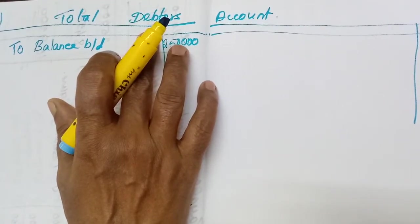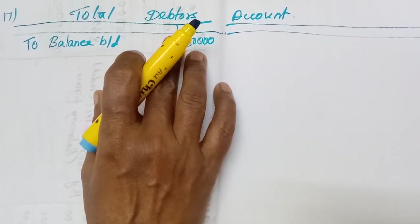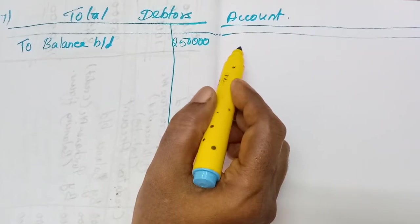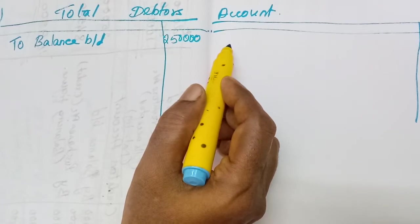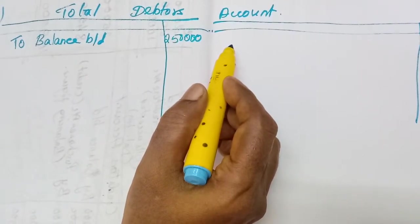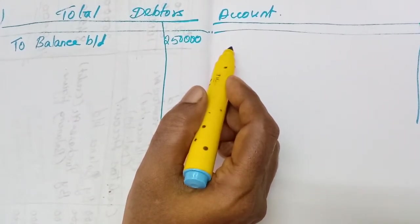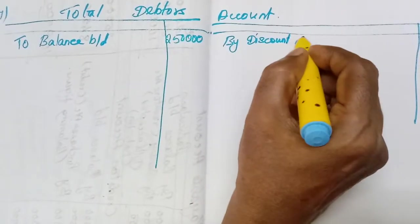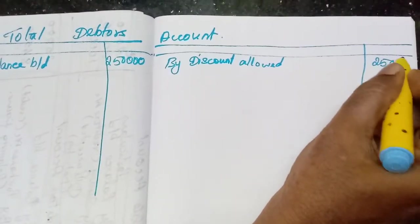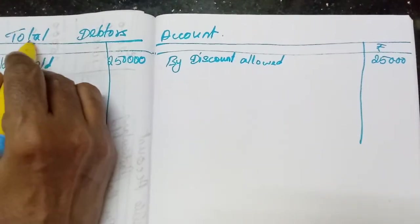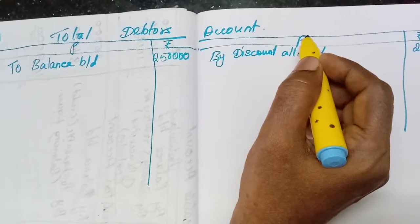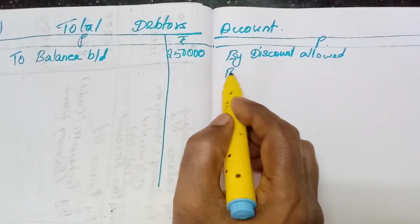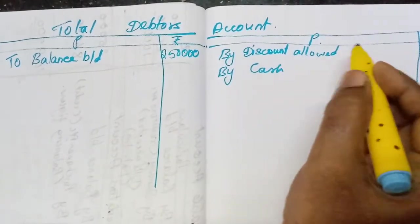Cash, furniture, creditors — these will not come here. Drawings will not come. Discount received will come in the next account. Discount allowed of 25,000 will come here. The entry is: discount allowed account debit, to debtors account — so write 'By discount allowed: 25,000.' Cash paid to creditors will not come. Cash received from debtors is related to this account, so write 'By cash: 5,35,000.'